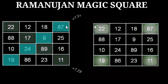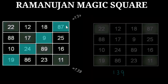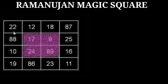More interesting patterns: if we add the four corner numbers — that is 22, 87, 11, and 19 — we again get their sum as 139. Now if we add this particular region of four numbers, the sum of all these numbers again comes out to be 139.